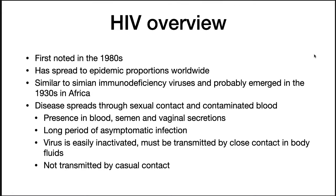HIV was first noted in the 1980s and has spread to epidemic proportions worldwide. It is similar to the simian immunodeficiency viruses and probably emerged in the 1930s in Africa. The disease spreads through sexual contact and contaminated blood. It is present in blood, semen, and vaginal secretions of infected individuals, and is not transmitted by casual contact, as the virus is easily inactivated outside the body.